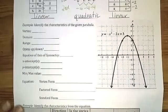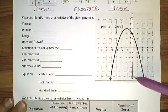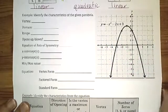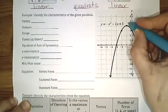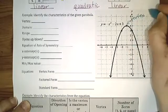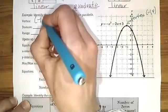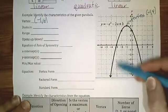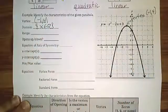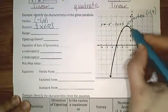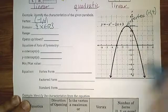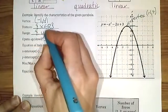Next we're going to look at properties of the parabola — the shape given when we plot a quadratic function — and identify different characteristics from the graph. The vertex is the very top or bottom point, or where the graph changes direction; here the vertex is at negative 1 and 4. The domain for any parabola is all real numbers. Looking at the range, all the y values are less than or equal to four, so the range is y ≤ 4.